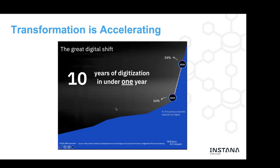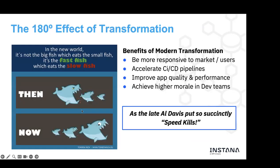McKinsey shows that while the pandemic accelerated digital transformation sky high, the ramp-up had already started before. McKinsey says it's 10 years of digitization in under one year. What's driving this is that it's no longer the large fish eating the small fish — it's the quicker fish eating the slower fish. Companies that can react to the marketplace and to user needs are the ones that will win.